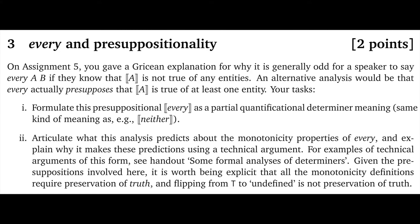Here you have two tasks. Task one: formulate this presuppositional 'every' as a partial quantificational determiner meaning. This will look like 'neither' in its overall form, but of course the content of the definiteness condition and the at-issue content will be different. Task two — this is the new piece: articulate what this analysis predicts about the monotonicity properties of 'every' and explain why it makes these predictions using a technical argument.